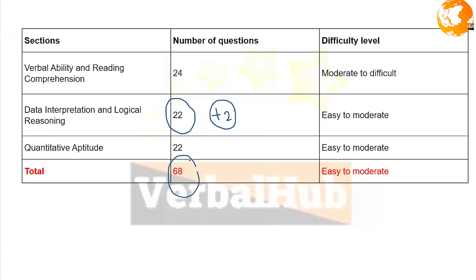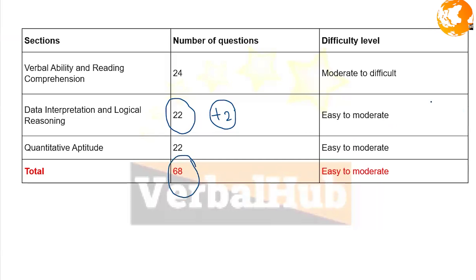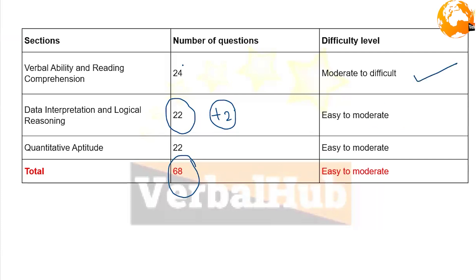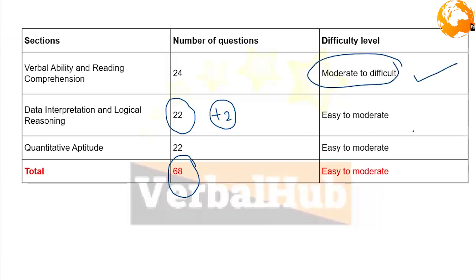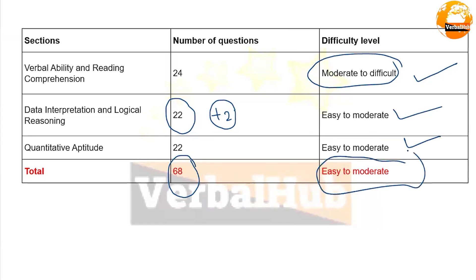If we talk about the level of difficulty: Verbal was moderate to difficult, DILR was easy to moderate, and Quant was easy to moderate. The overall level of difficulty was easy to moderate.